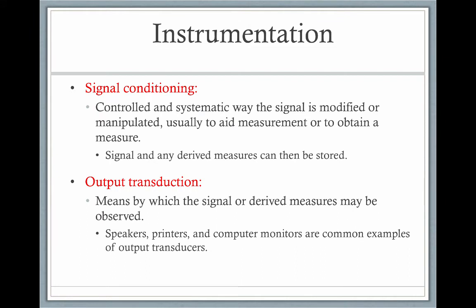Signal conditioning refers to the controlled and systematic way the signal is modified or manipulated, usually to aid measurements or to obtain a measure. The signal and any derived measure can then be stored. We also have output transduction — the means by which the signal or derived measure may be observed. Speakers, printers, and computer monitors are all examples.